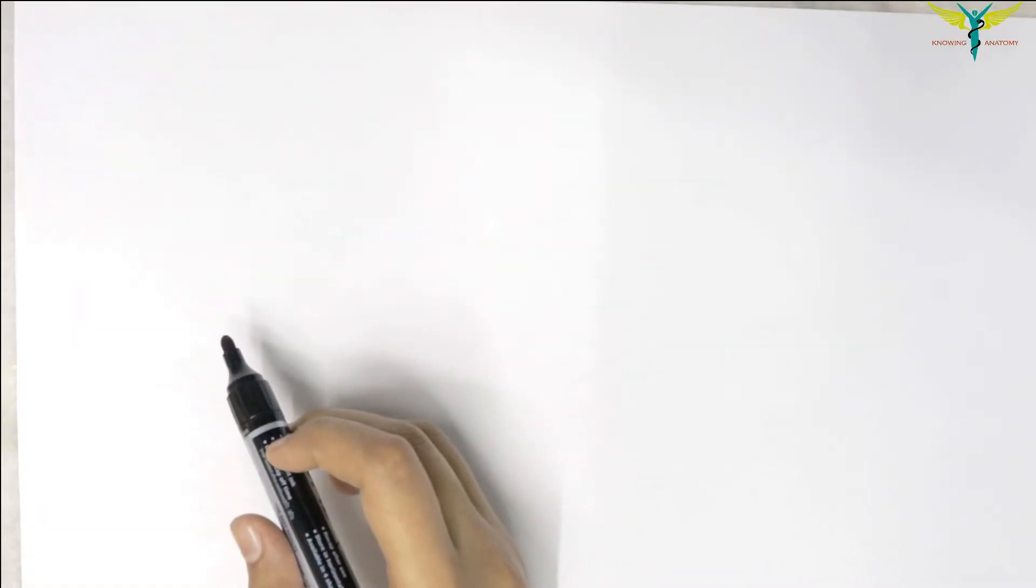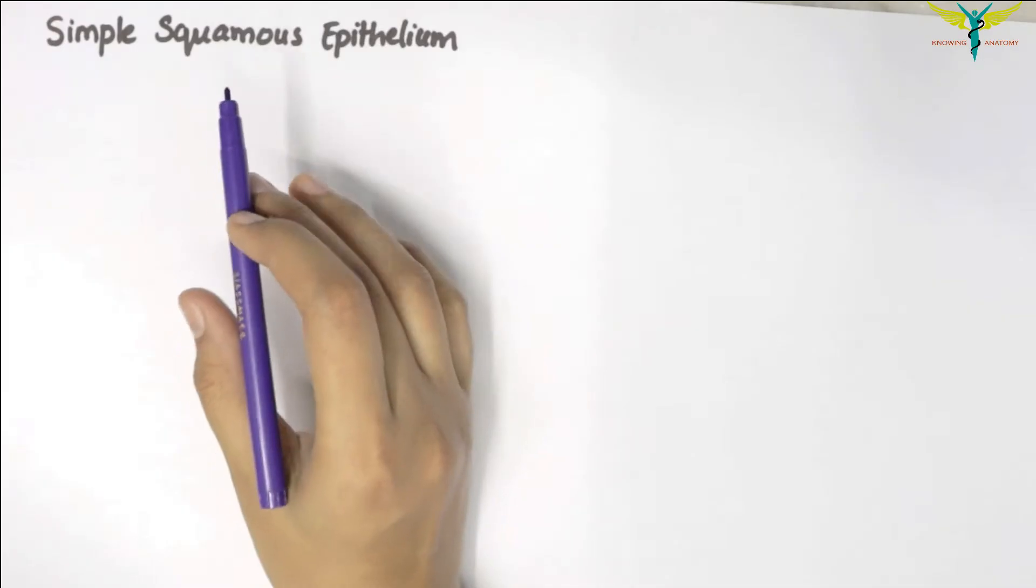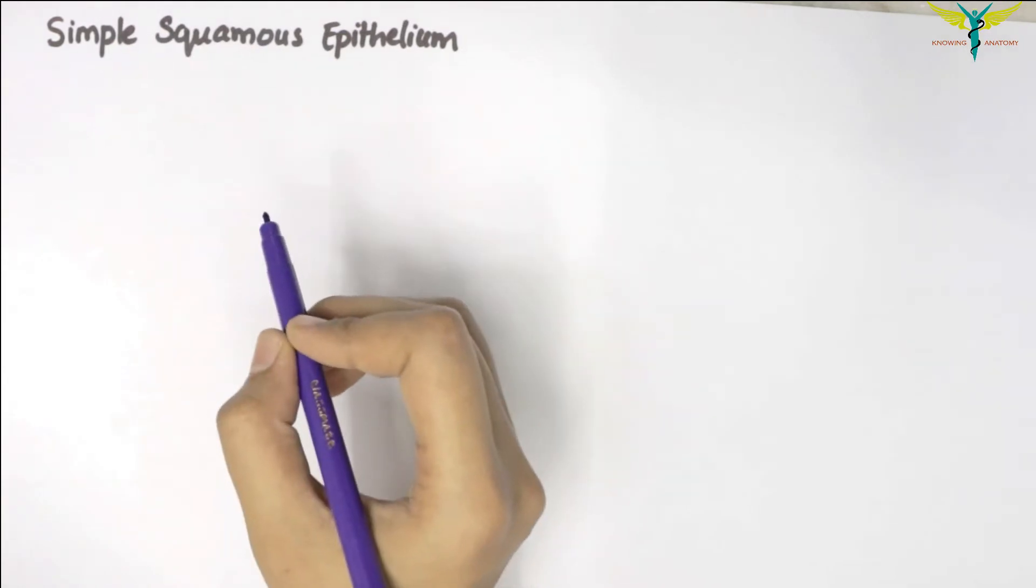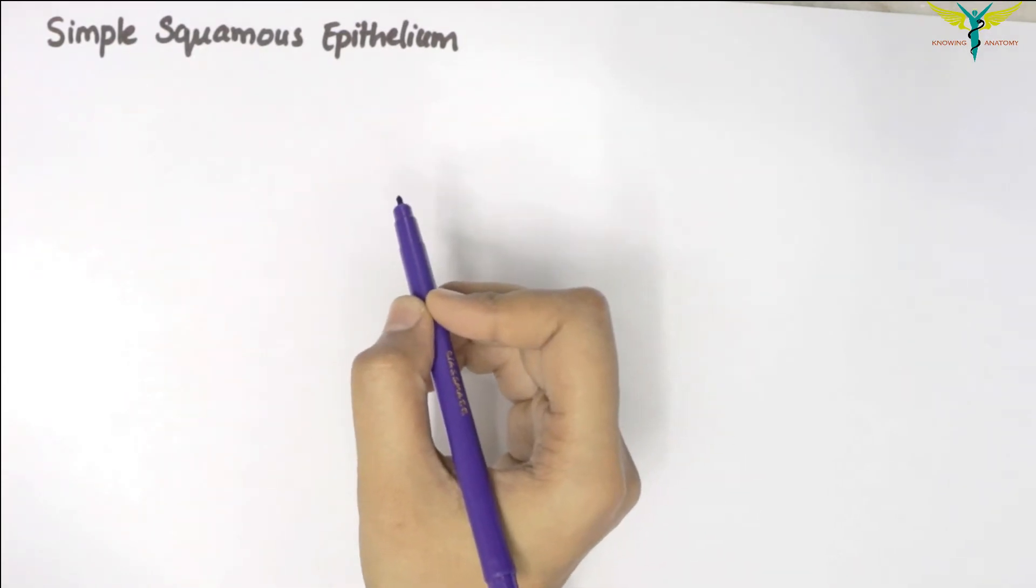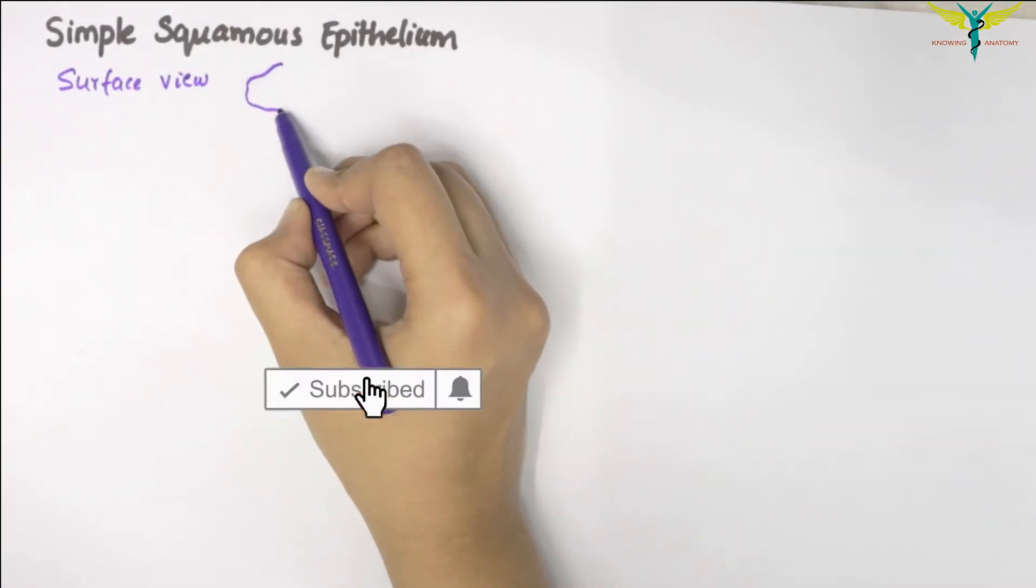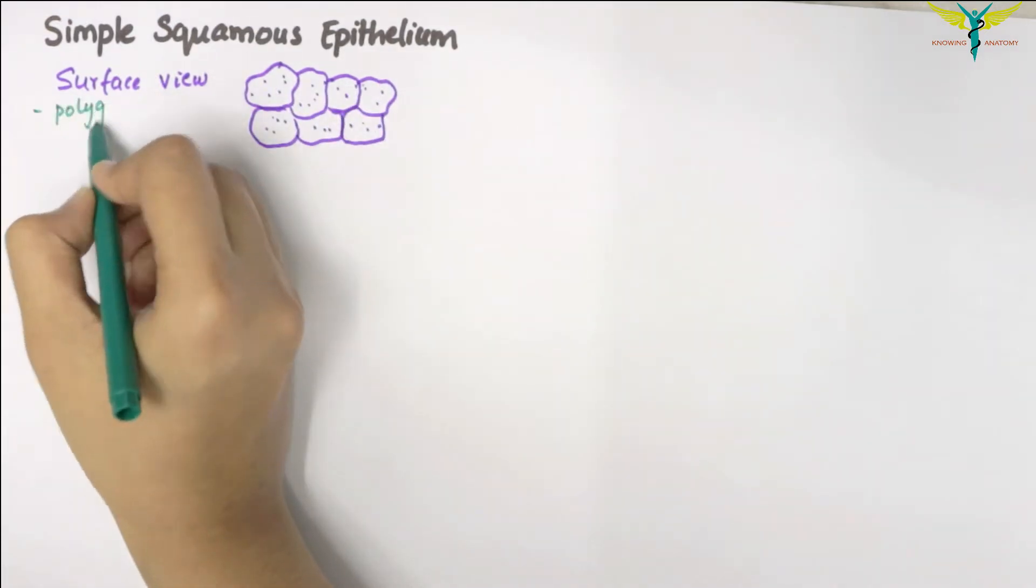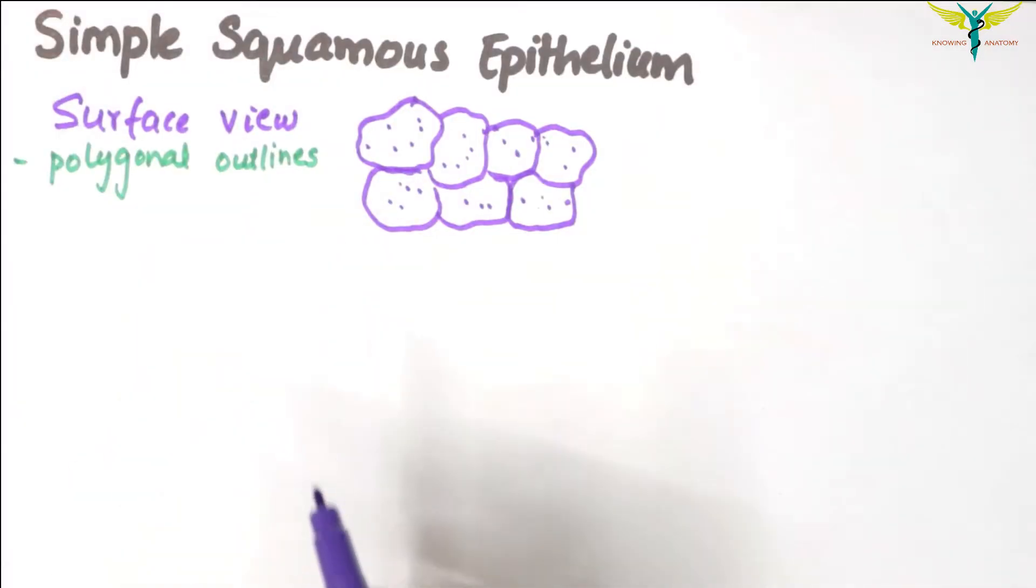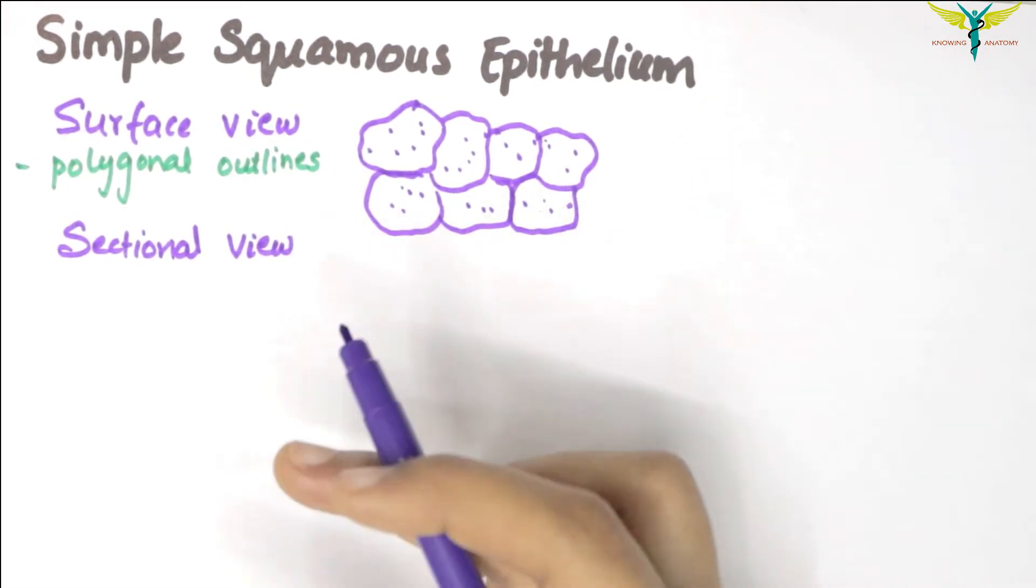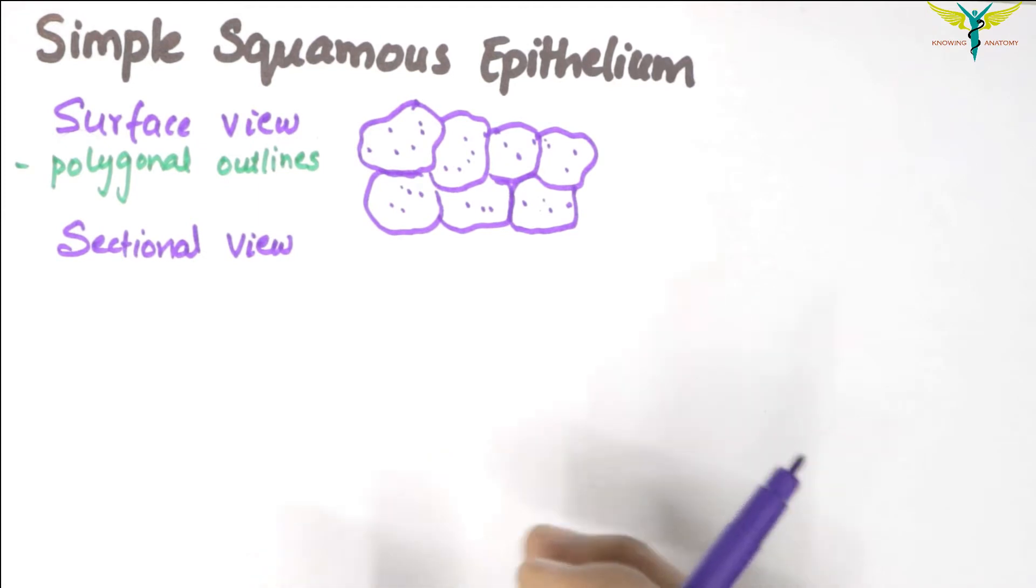In this video, let's learn about the simple squamous epithelium. In the surface view of the simple squamous epithelium, the cells have polygonal outlines and they interlock with those of the adjoining cells. In the sectional view, the cells appear flattened and their height is much less compared to the width.